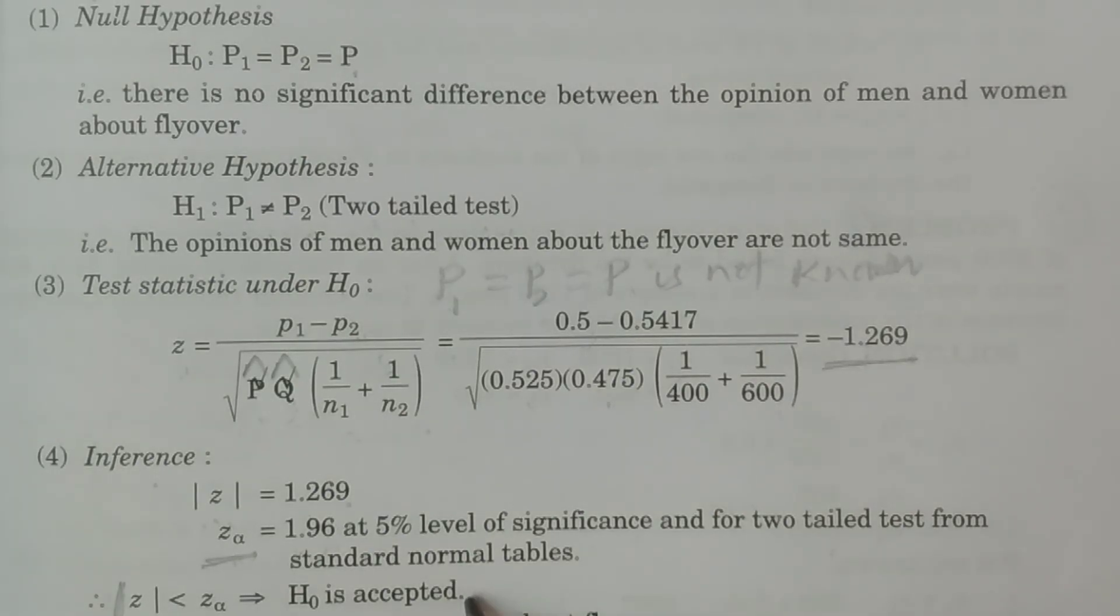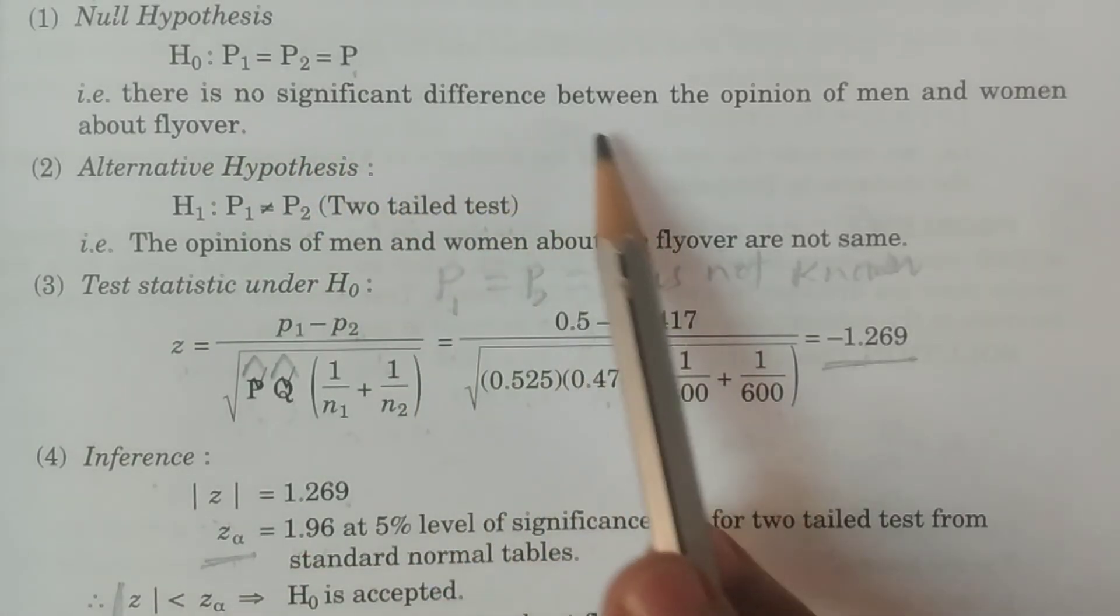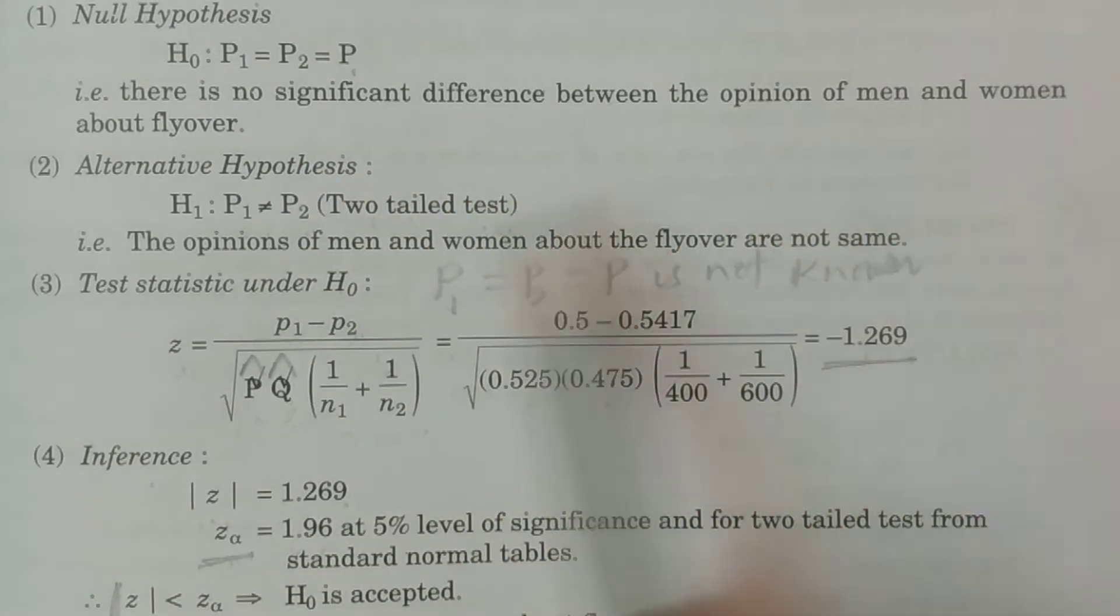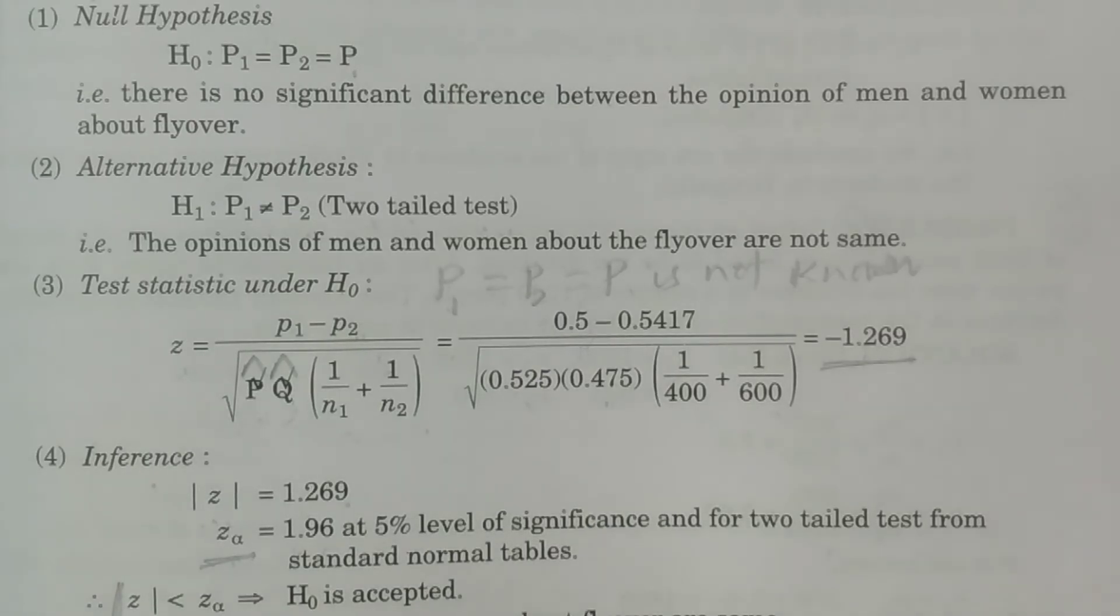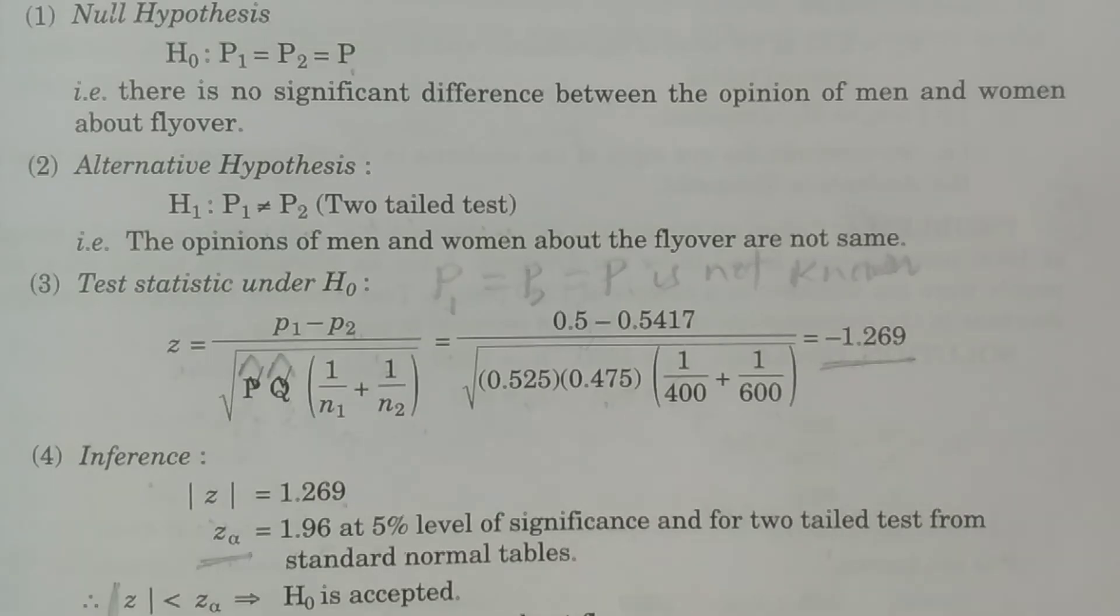Since H naught is accepted, there is no significant difference between the opinions of men and women about the flyover near their residence. Therefore, the proportion of men and women in favor of the proposal about the flyover are the same. There is no significant difference - men and women have almost the same opinion about the flyover. Hope you understand. This is our conclusion. Thank you.